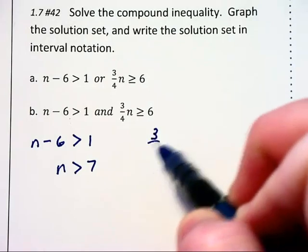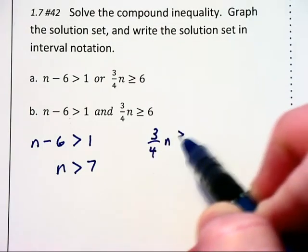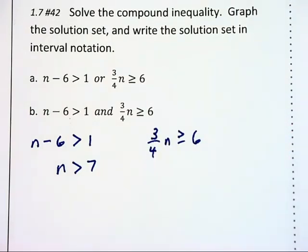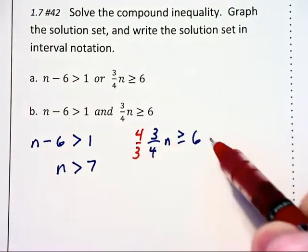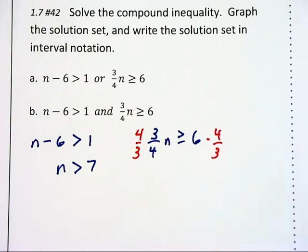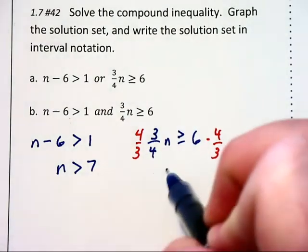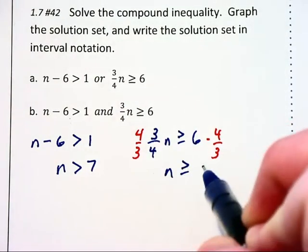If we take a look at the second one, which is 3 fourths n is greater than or equal to 6, and we clear the fraction by multiplying through by 4 thirds on each side, we will then have n is greater than or equal to 8.